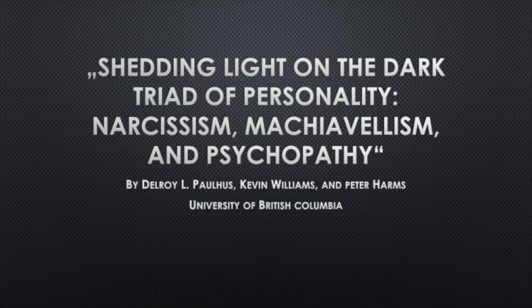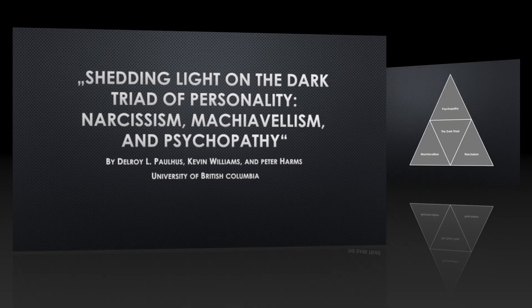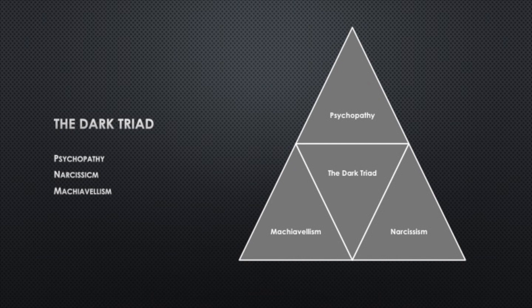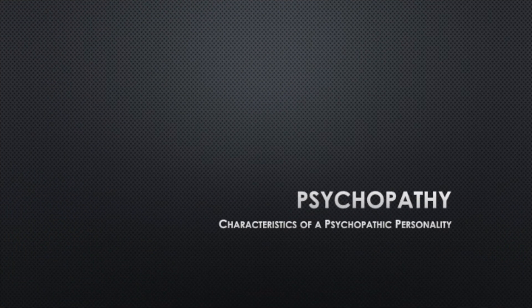So before we dive into the research findings, I would like to give you a quick overview of what the Dark Triad actually is. The Dark Triad is a construct consisting of the three personality disorders that are Psychopathy, Narcissism and Machiavellianism. In the next few slides we'll go quickly over the typical characteristics for each personality disorder, and we start with Psychopathy.